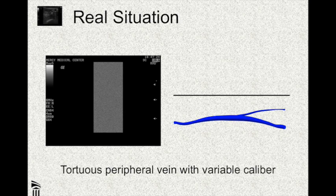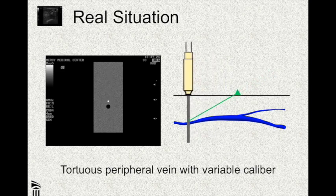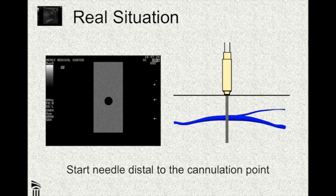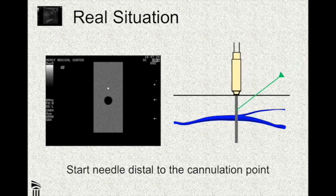So you look at the vein on ultrasound and decide where you want to go — this section where it's relatively big and superficial. You put down your needle and off you go, and everything looks good for a while until that blood vessel ran away from you and got smaller. The moral is that wherever you're looking at the vein is not where you're going to hit it. You have to back up from that point and allow for the distance it's going to take to get to that depth. By the time the needle gets down to the depth of the blood vessel, it's going to look like the spot where you want to hit it.